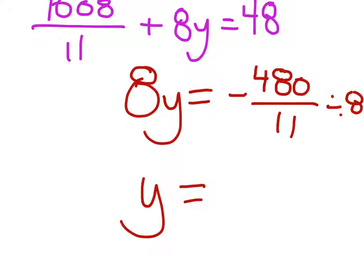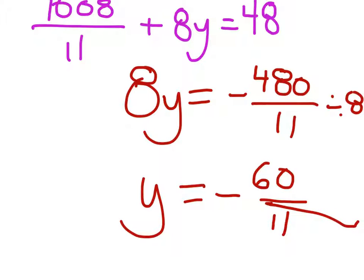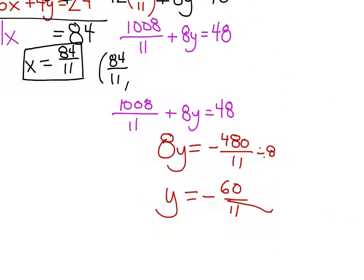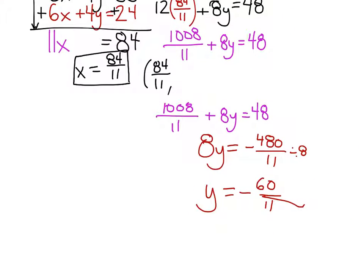We already have the X value, so we're actually done. This gives us an improper fraction: negative 60 over 11. So as it turns out, our final answer would be 84 over 11 and negative 60 over 11. Done.